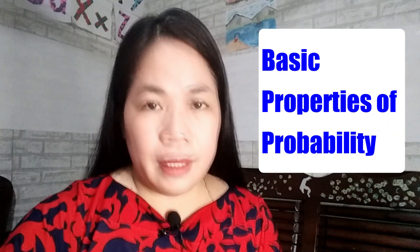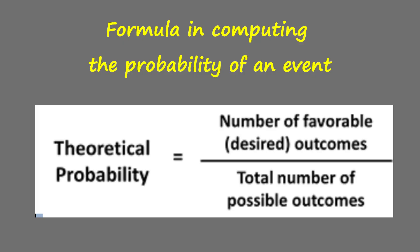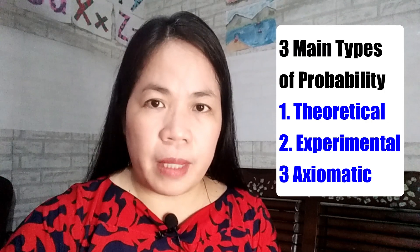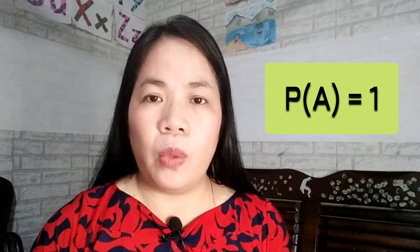Basic properties of probability. In computing the probability of an event, we use the formula: theoretical probability equals number of favorable or desired outcomes divided by the total number of possible outcomes. We use theoretical probability here because there are three main types of probability: theoretical probability, experimental probability, and axiomatic probability. In this discussion, we use theoretical probability. Probability is a value between zero and one, inclusive. If the probability of an event A is zero, it means the event is impossible to happen. If it is one, it means it is certain to happen — 100%.